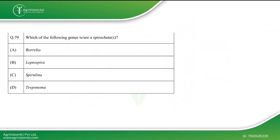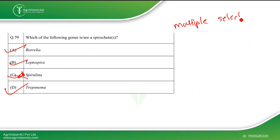The next question asks which bacterial genera are spirochetes. Examples of spirochete genera include Spirochaeta, Treponema, Borrelia, and Leptospira. From the options, Leptospira, Borrelia, and Treponema are spirochetes — spirulina is not. This is a multiple-select question, and the correct answers are options A, B, and D.